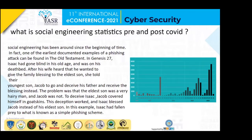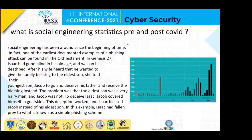In the Bible, in Genesis, there's an account where Isaac had gone blind in his old age and was on his deathbed. After his wife heard that he wanted to give the family blessing to his eldest son, she told the youngest son Jacob to go and receive the blessing instead. The problem was that the eldest son was a very hairy man and Jacob was not. So to deceive Isaac, Jacob covered himself in boar skin. This deception worked and Isaac blessed Jacob instead of his eldest son. In this example, Isaac had fallen prey to what is known as a simple phishing scheme.